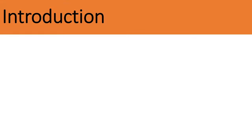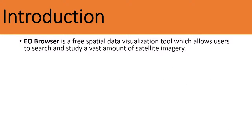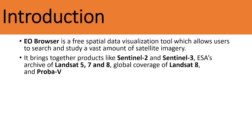First of all, an introduction. EO Browser is a free spatial data visualization tool which allows users to search and study a vast amount of satellite imagery. Using the Earth Observation Browser we can visualize different types of satellite images — it can be Landsat, Sentinel, MODIS, land cover datasets. It brings together products like Sentinel-2, Sentinel-3, Landsat 5, 7, 8, Landsat 9, and these satellite images we can easily access and visualize.